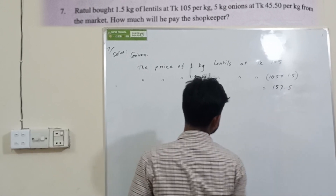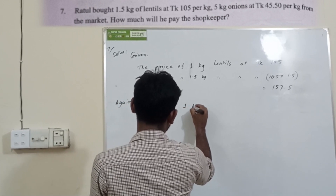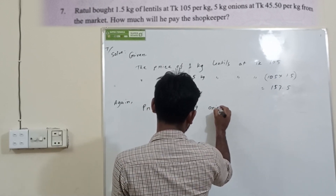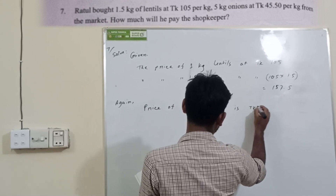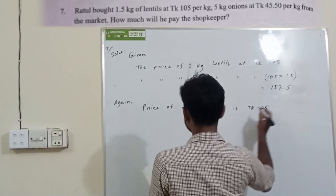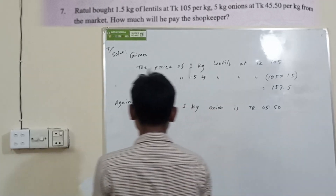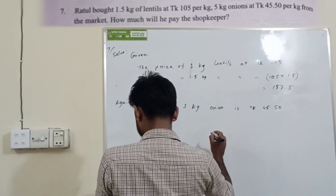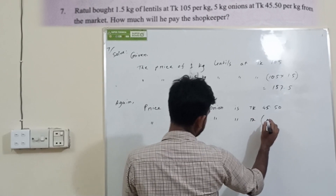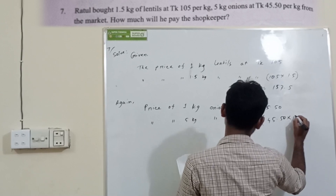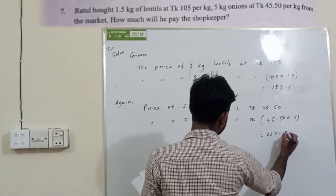That gives 157.5 taka. The price of 1 kg onion is taka 45.50. So the price of 5 kg onion is 45.50 into 5, which is 227.5 taka.